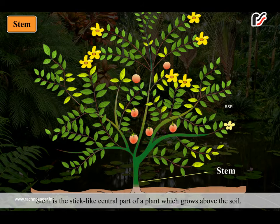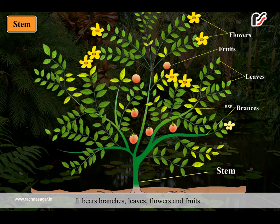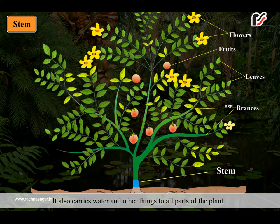Stem is the stick-like central part of a plant which grows above the soil. It bears branches, leaves, flowers and fruits. It also carries water and other things to all parts of the plant.